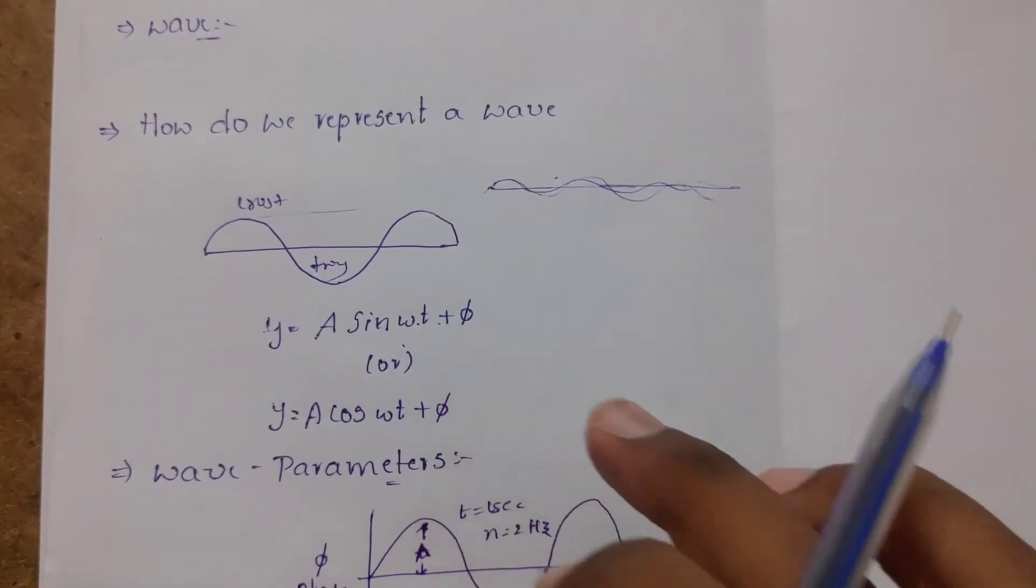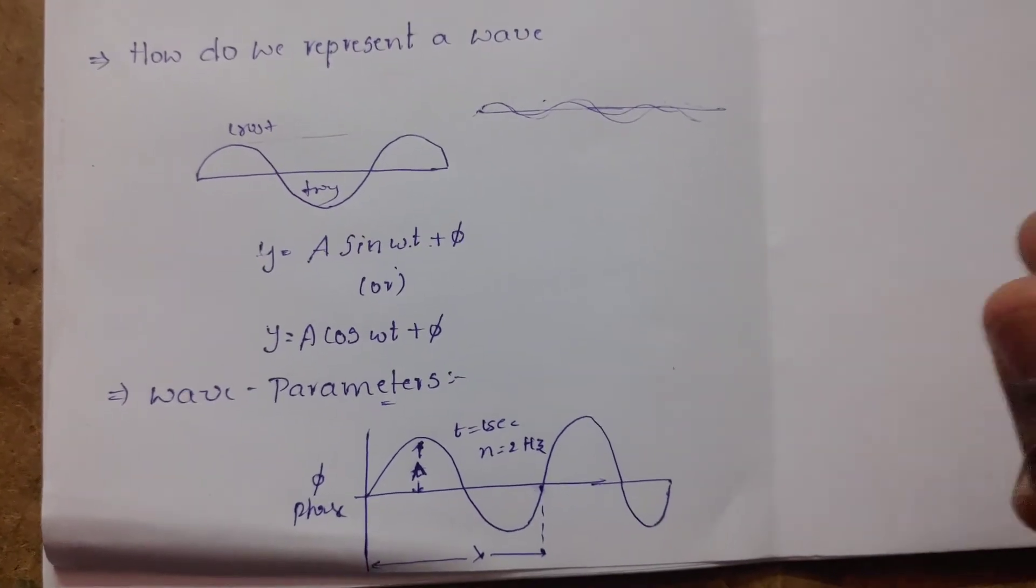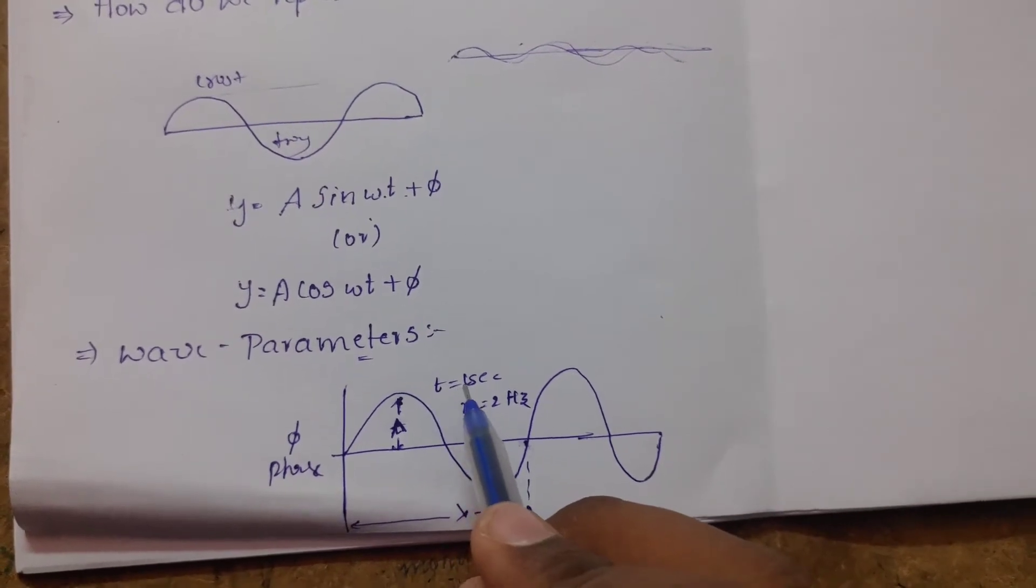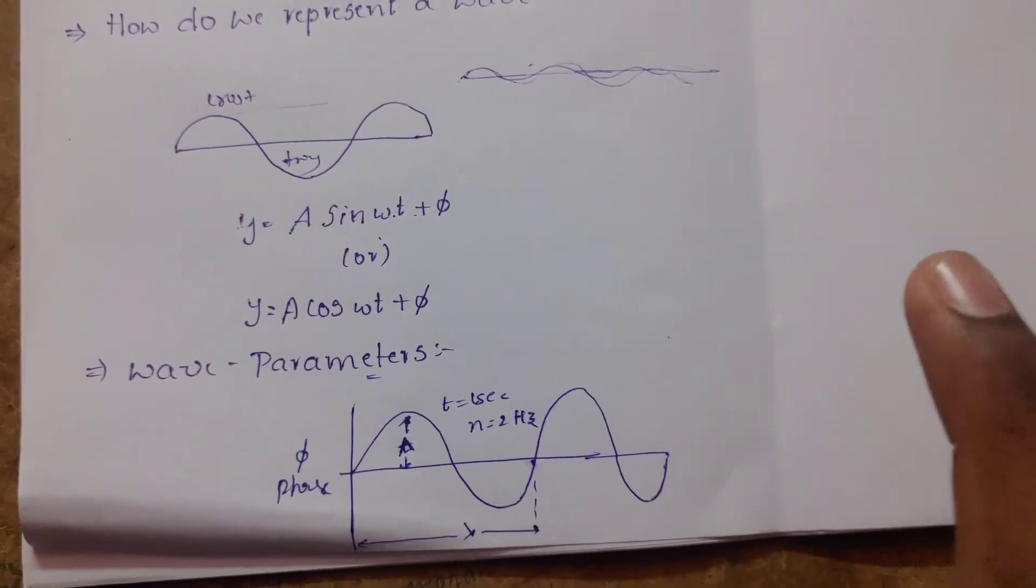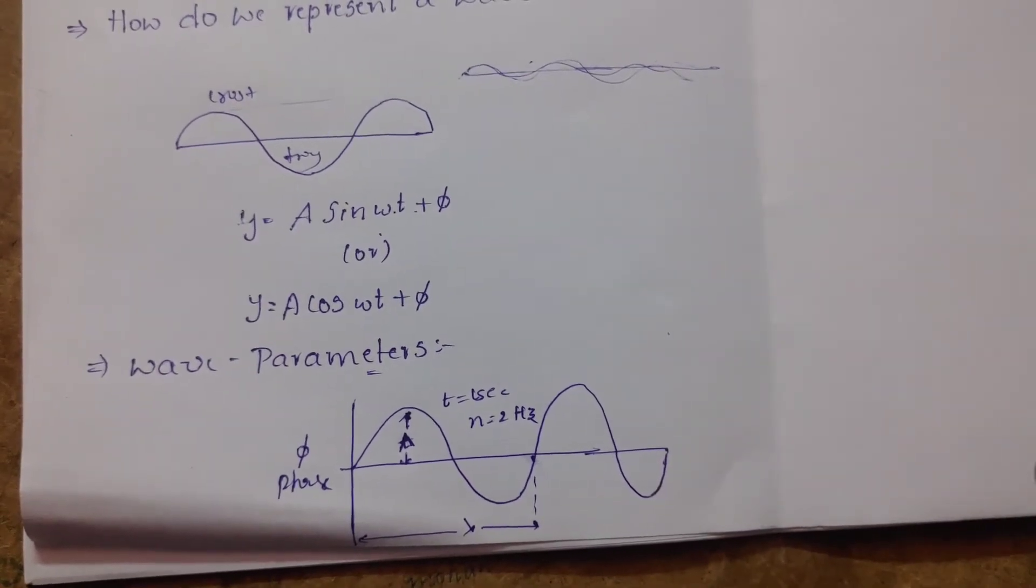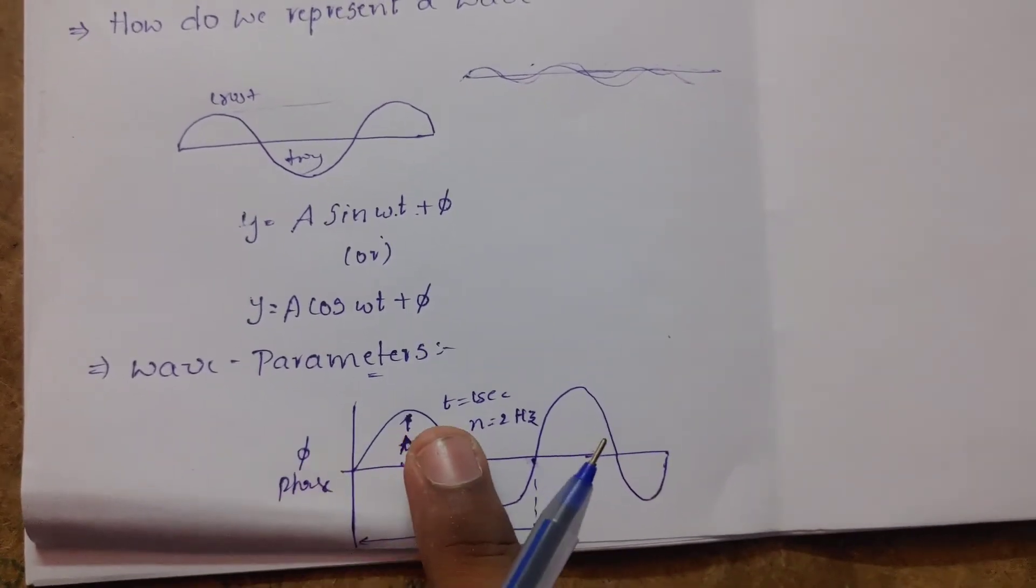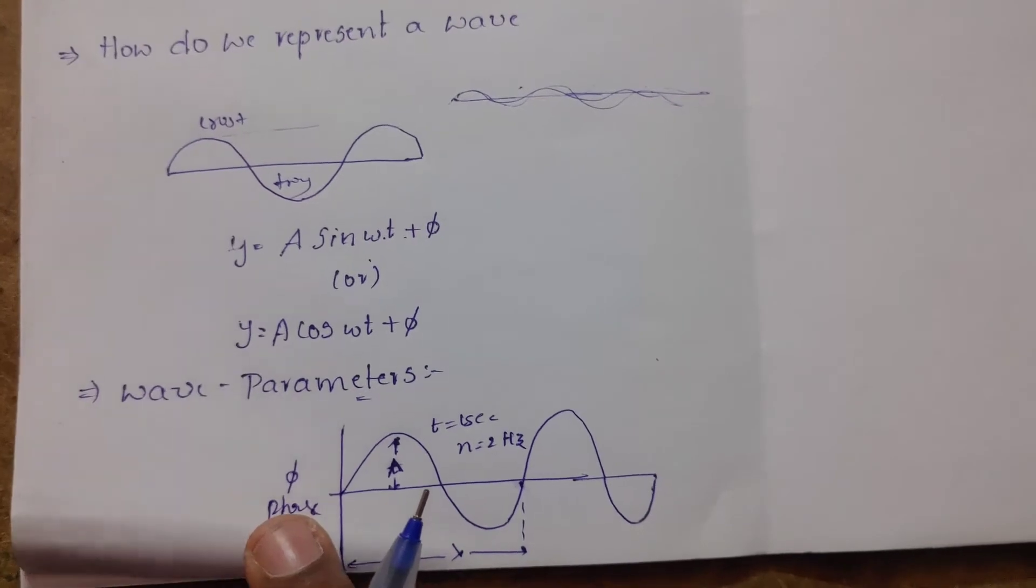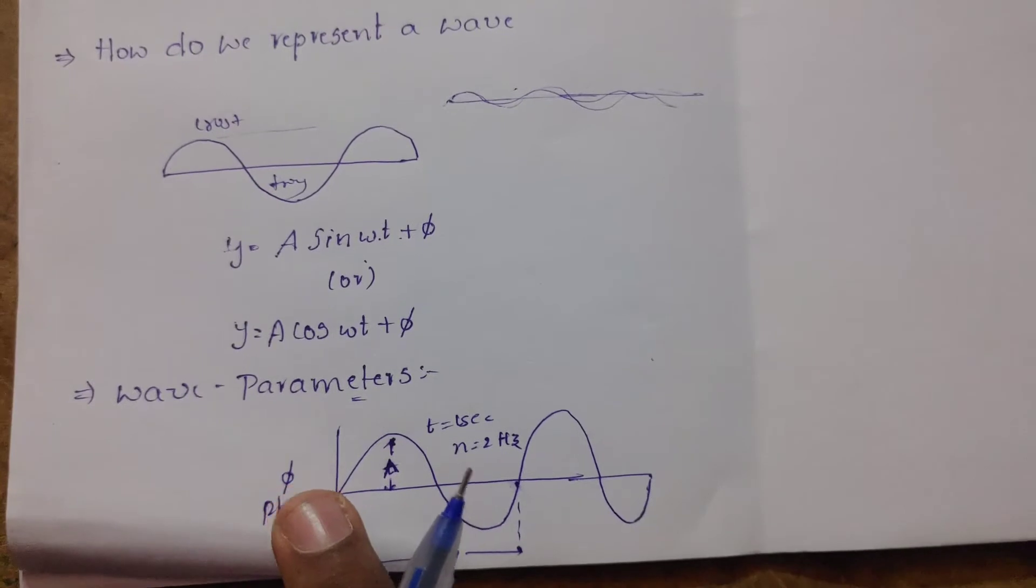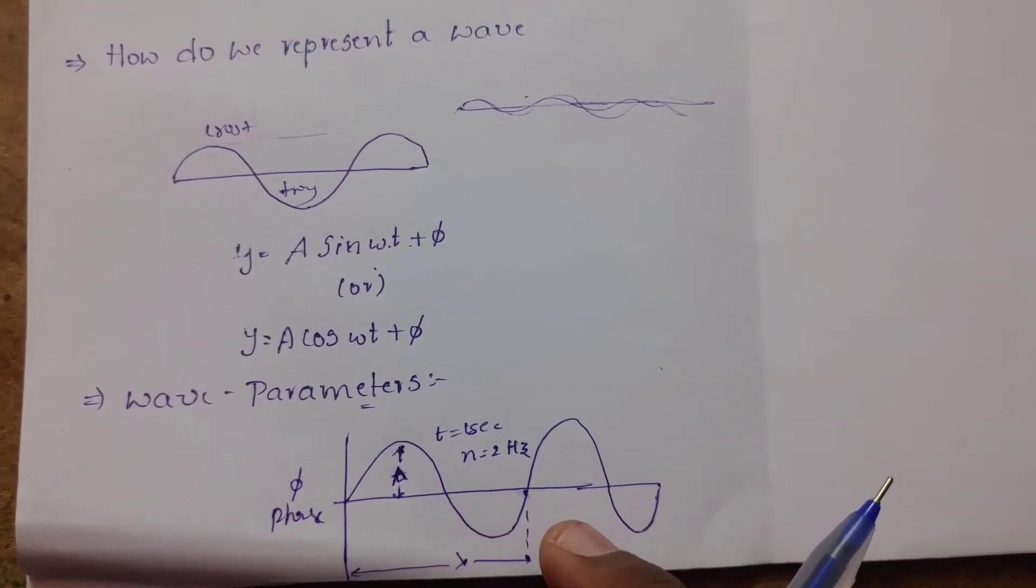The wave parameters: if t equals one second, we have frequency. Maximum amplitude and minimum is one second. Phase is another parameter. The wavelength and phase are the wave parameters used in interference and diffraction.